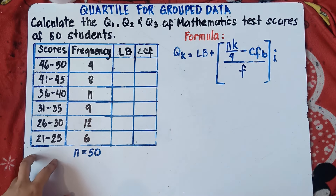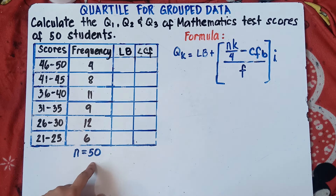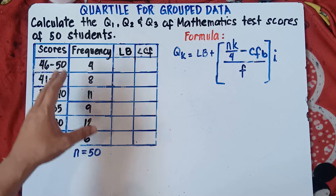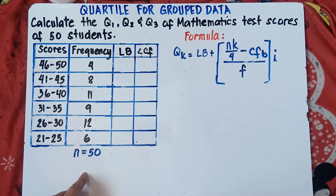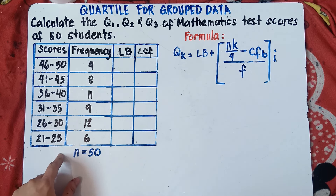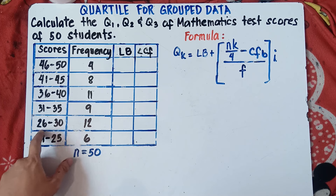These are the scores, and this will be the frequency. The total number of frequency is 50. If you add 6 plus 12 plus 9 plus 11 plus 8 plus 4, you will get 50. Frequency means how frequent the score is occurring. If you have 6 in this particular row, it means 6 students got a score from 21 to 25. In this row, you have 12, meaning 12 students scored from 26 to 30, and so on.